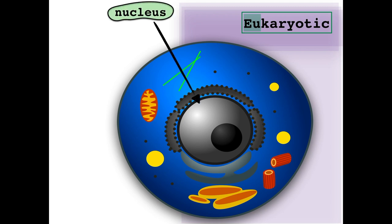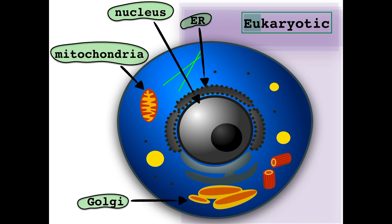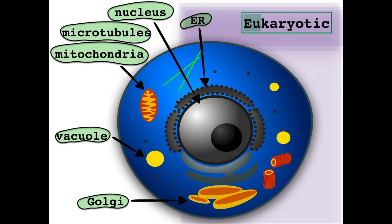The additional organelles, or compartments with different cellular functions surrounded by a membrane, are the mitochondria — the so-called powerhouse of the cell — the endoplasmic reticulum, important for the production of relevant biomolecules, the Golgi apparatus, which is responsible for packing and processing those biomolecules, vacuoles, in which some molecules are stored, microtubules, which provide structural support for the cell, and the centrioles, which have a role in cell division.